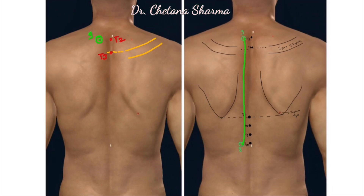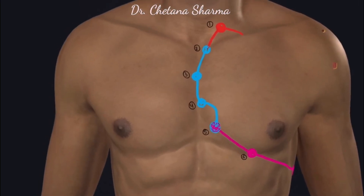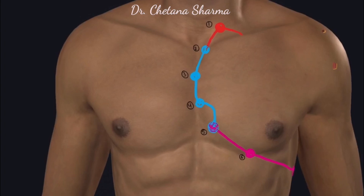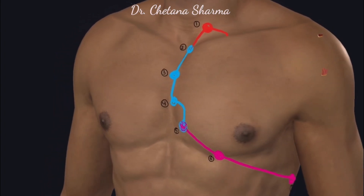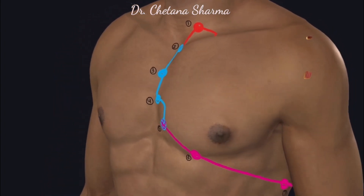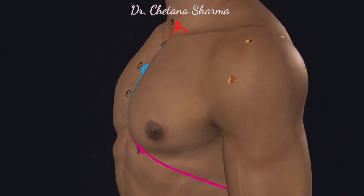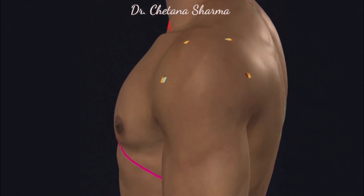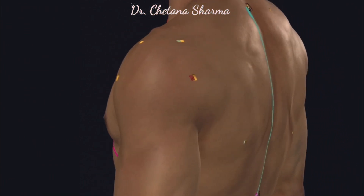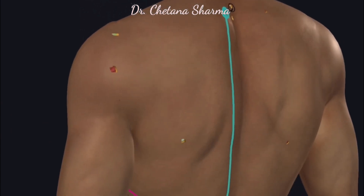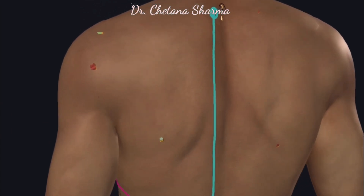In this model, you can see the apex marked in red, the anterior border marked in blue, the inferior border marked in pink, and the posterior border marked in green. Thanks for watching.